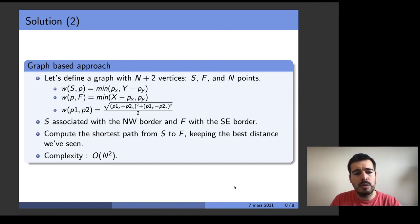Now in this graph we can compute the shortest path from s to f, keeping the best distance we've seen so far. This approach would take complexity n squared.